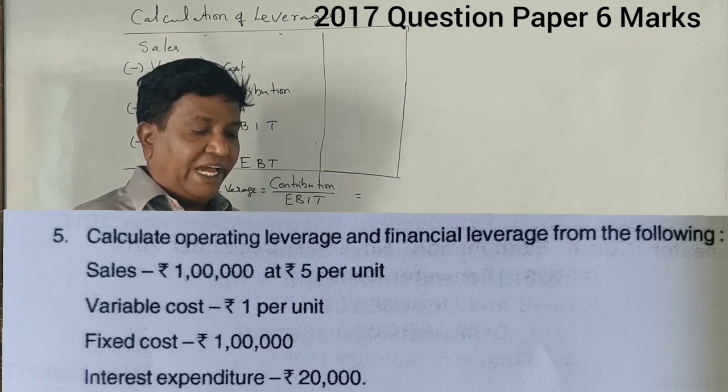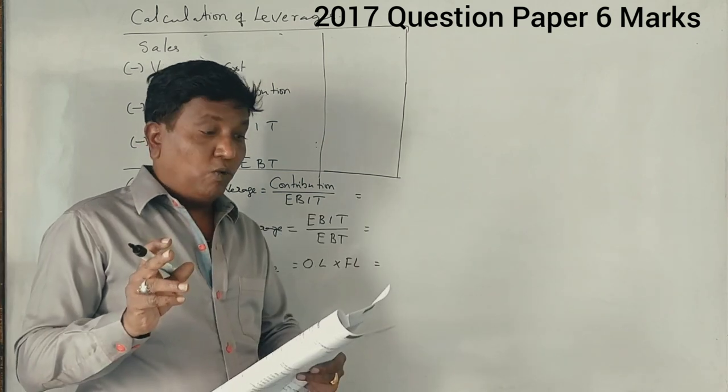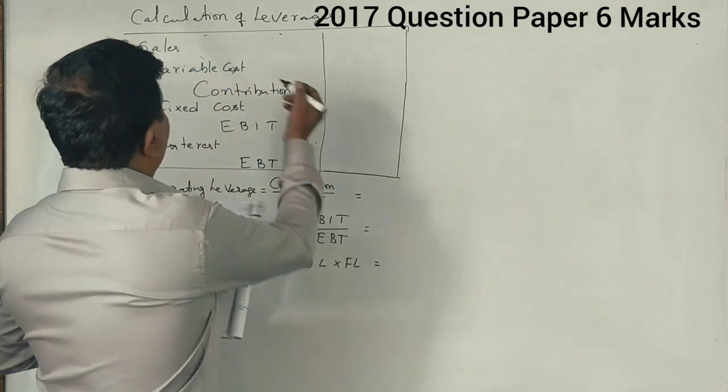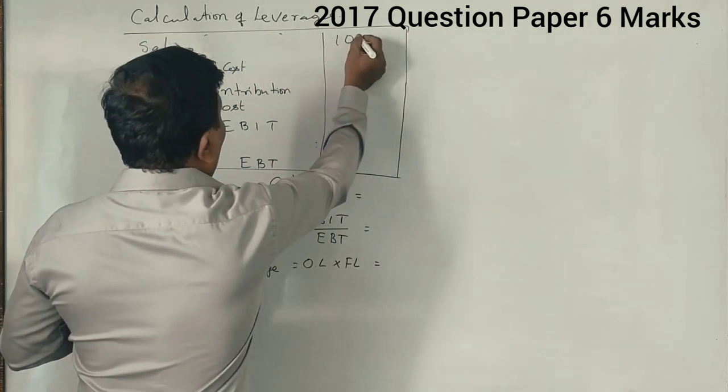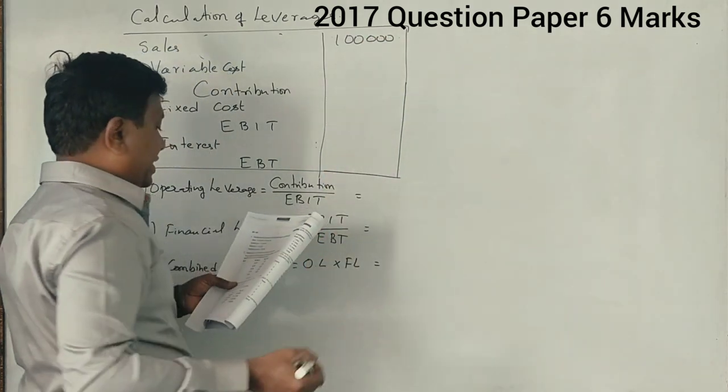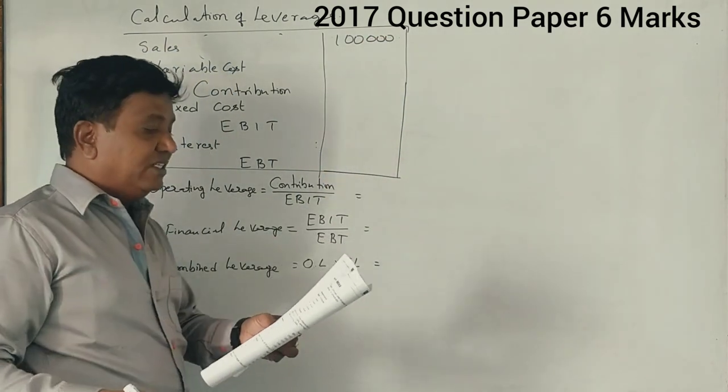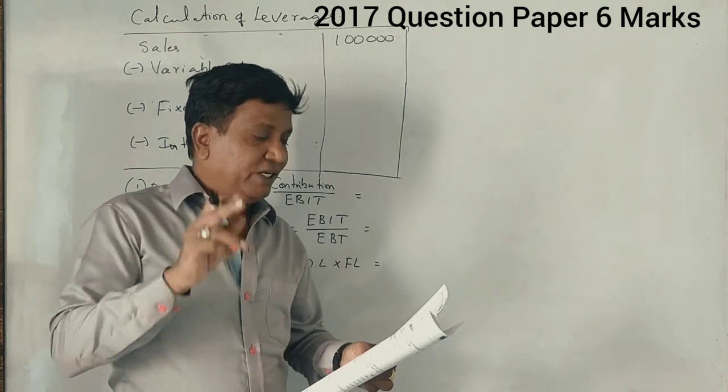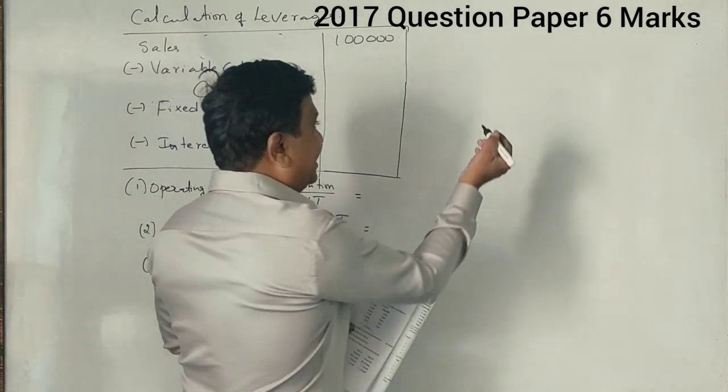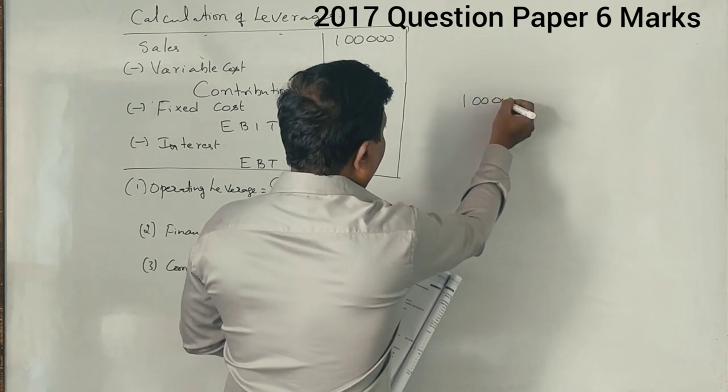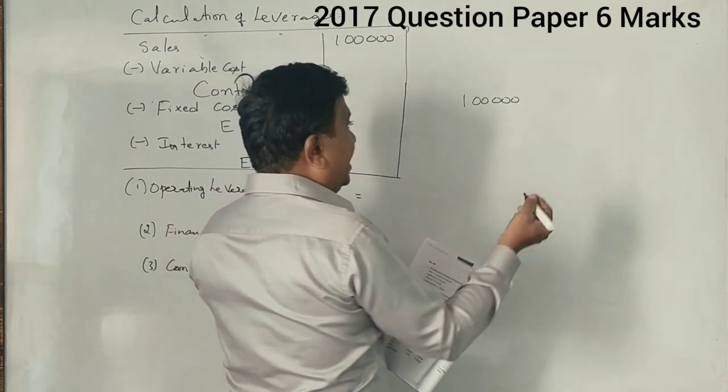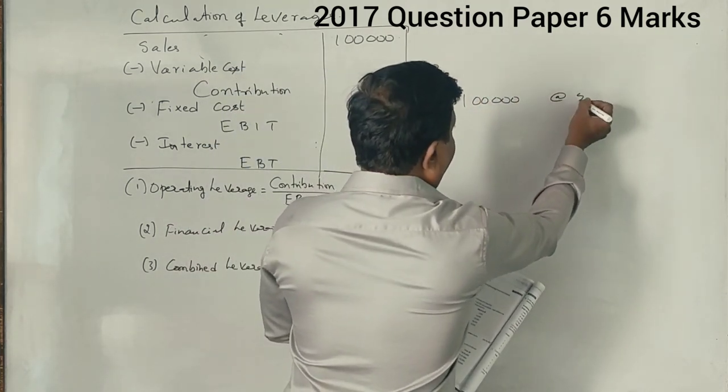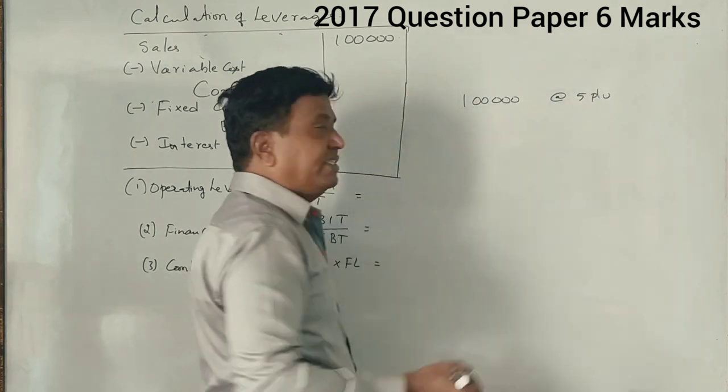Sales is 1 lakh rupees is given, and variable cost is 1 rupee per unit. But here very importantly, he is given sales as 1 lakh rupees and he sold each sale at 5 rupees per unit. Then how many units did he sell?